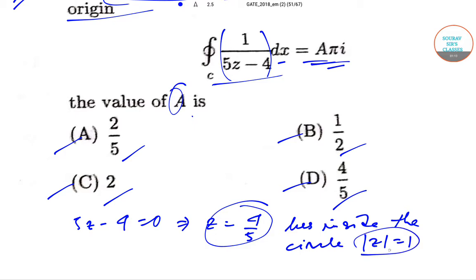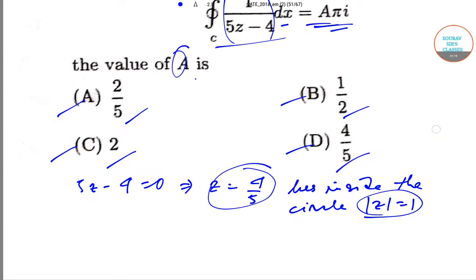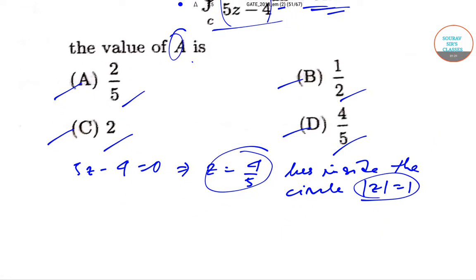Modulus of z equal to 1, which is the given unit circle. So z equal to 4 by 5 lies inside this circle. So definitely we can write that integration 1 by 5z minus 4 dz, we can write it as 1 by 5 times dz by z minus 4 by 5.